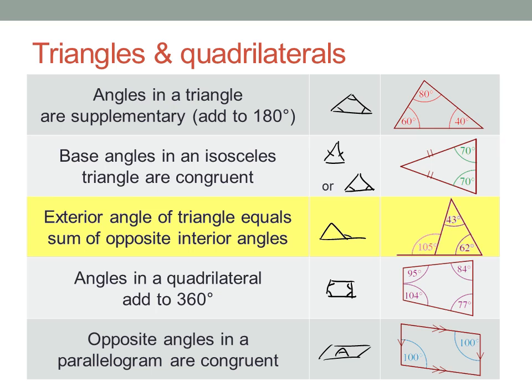Now the next one sometimes confuses people. It says the exterior angle of a triangle is equal to the sum of the opposite interior angles. Look carefully. The exterior angle is equal to the sum of the opposite interior angles.